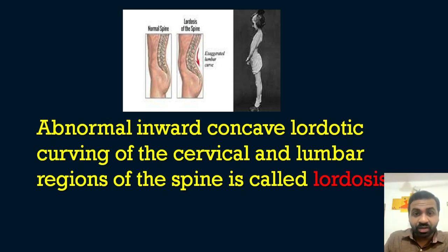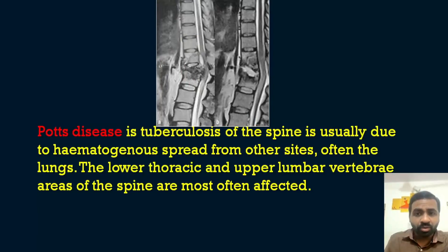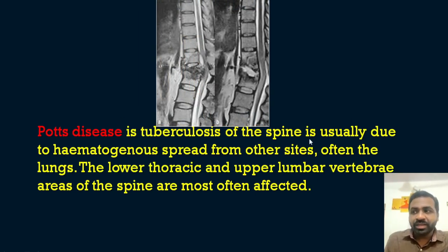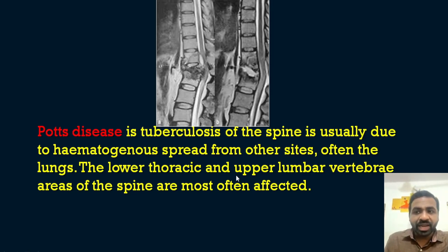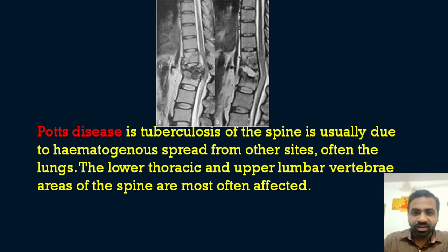Pott's spine is tuberculosis of the spine, usually due to hematogenous spread from other sites, often the lungs. The lower thoracic and upper lumbar vertebrae are mostly affected in Pott's spine.